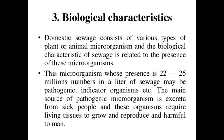Biological characteristics: domestic sewage consists of various types of plant, animal, and microorganisms. The biological characteristics of sewage are related to the presence of these microorganisms. The number of microorganisms can be 22 to 25 million per litre of sewage and may include pathogenic or indicator organisms. The main source of pathogenic microorganisms is excreta from sick people; these organisms require living tissues to grow and reproduce and are harmful to humans.